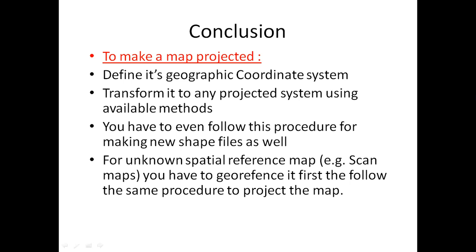In conclusion, to make a projected map, you first have to define the geographic coordinate system, then transform that geographic coordinate system to any projection system using available methods. The transformation may be transverse, conic, azimuthal, or mathematical — depending on your preference and objectives.